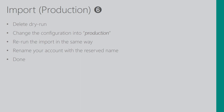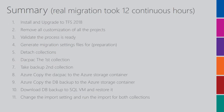Once the dry run is finished, I delete the dry run account, change the configuration from dry run to production, and rerun the entire import process. Then I rename the account with the reserved account name and the migration is done.